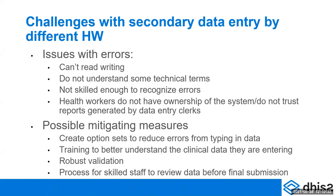There are certain mitigating measures that you can take. You can create option sets to reduce errors from typing in data. You can train the people who are entering the data to give them some clinical training so they can better understand the clinical data they are entering and more easily recognize errors. You should also have robust validation procedures — some built in while you're doing data entry, and some done at the end of data entry. There are different validation features within DHIS2. Then you should also have a process for the skilled staff who generated the information — the midwife, et cetera — to review the data before final submission. So that at the end of the day, when all the data has been aggregated to national level, they cannot say they have no idea why their indicators are so low — because they signed off on every piece of data that was entered into the system.